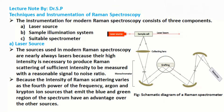The instrumentation for modern Raman spectroscopy consists of three components: a laser source, a sample illumination system, and a suitable spectrometer. The sources used in modern Raman spectroscopy are nearly always lasers because their high intensity is necessary to produce Raman scattering of sufficient intensity to be measured with a reasonable signal-to-noise ratio. Because the intensity of Raman scattering varies as the fourth power of the frequency, argon and krypton sources that emit in the blue and green region of the spectrum have an advantage over other sources.